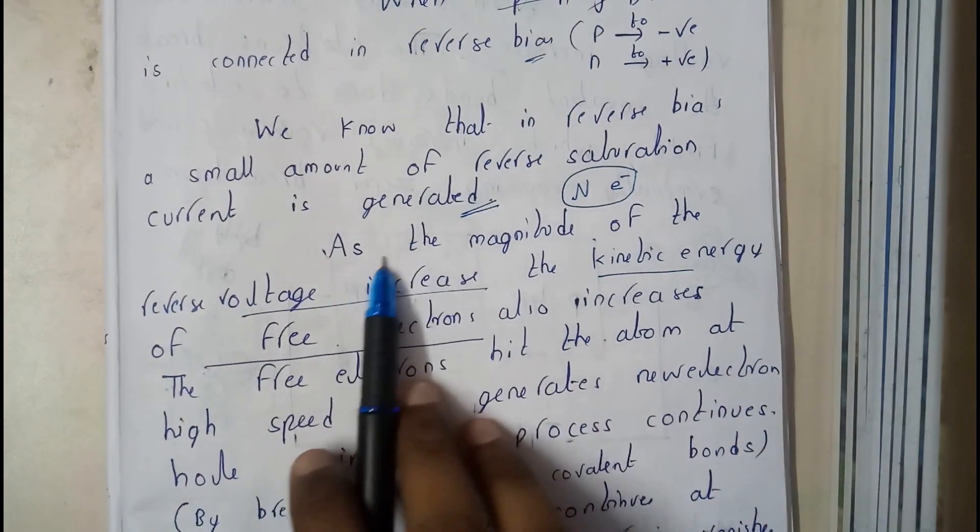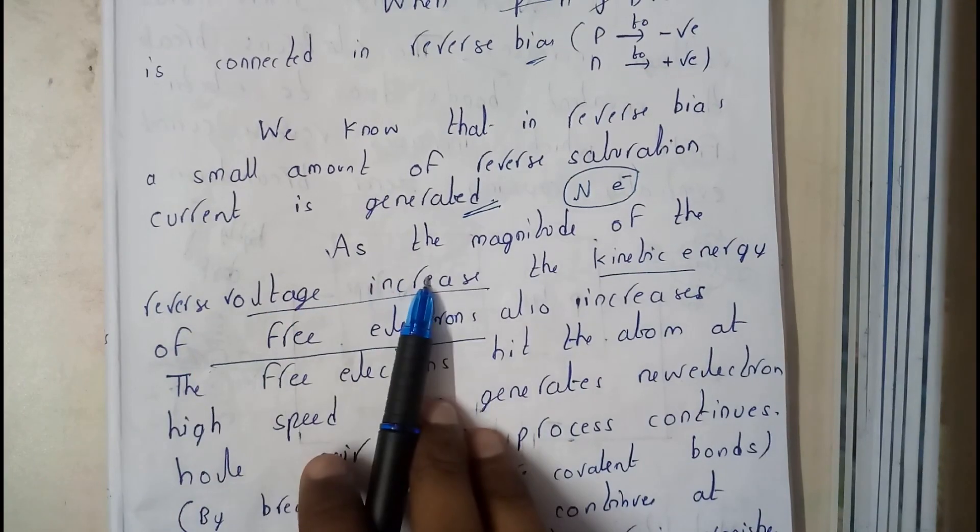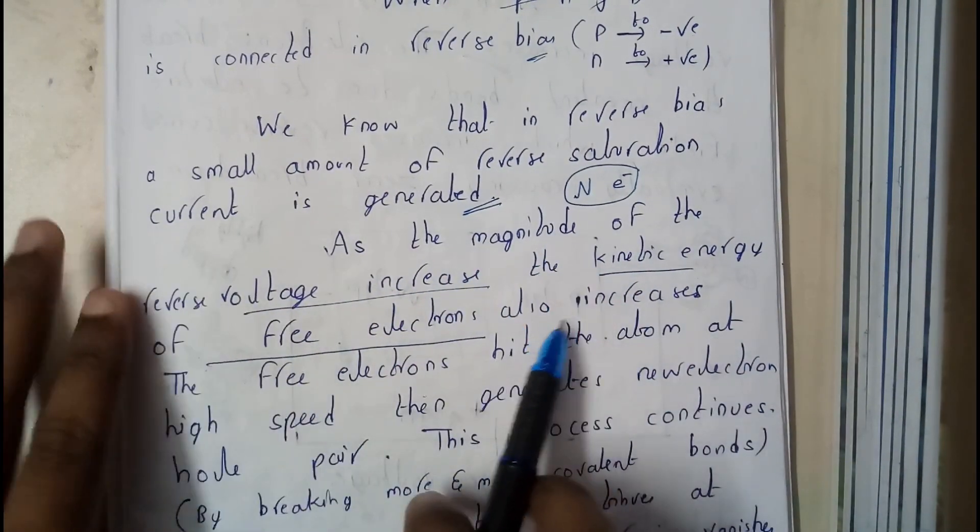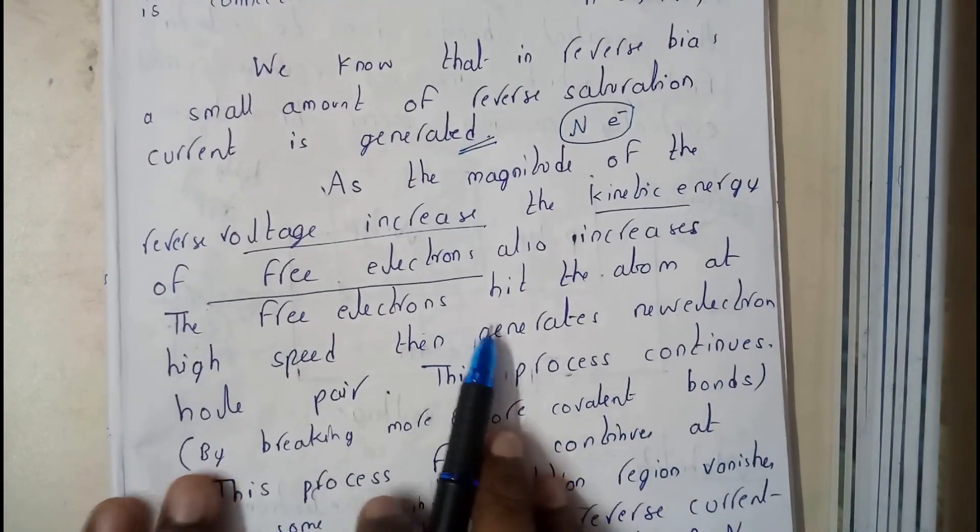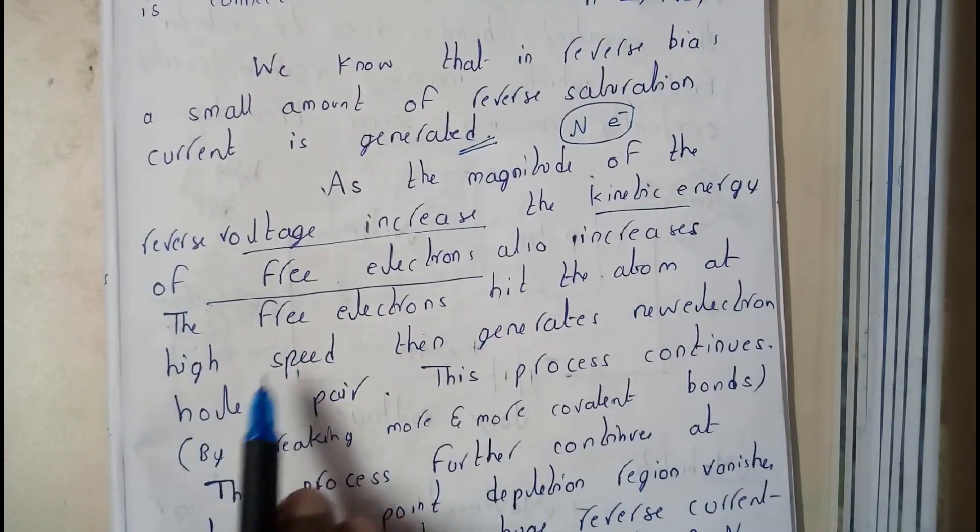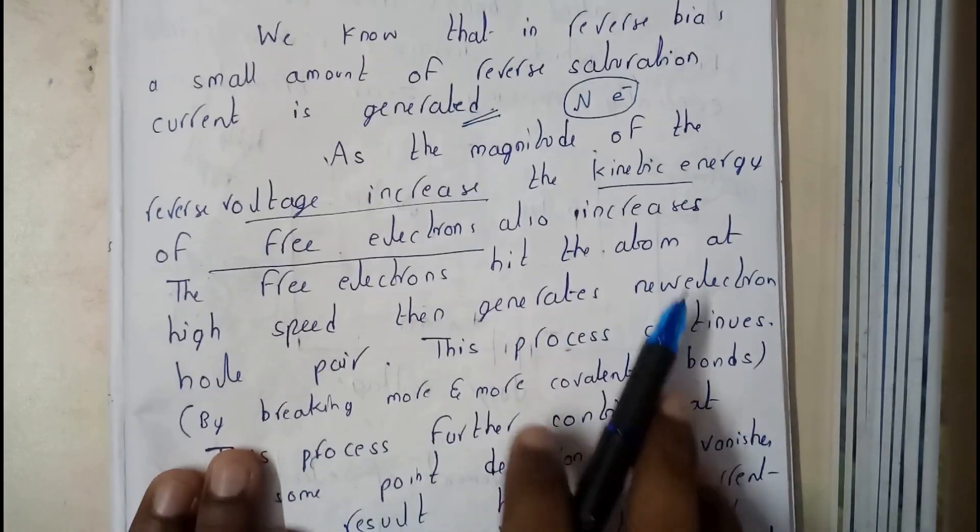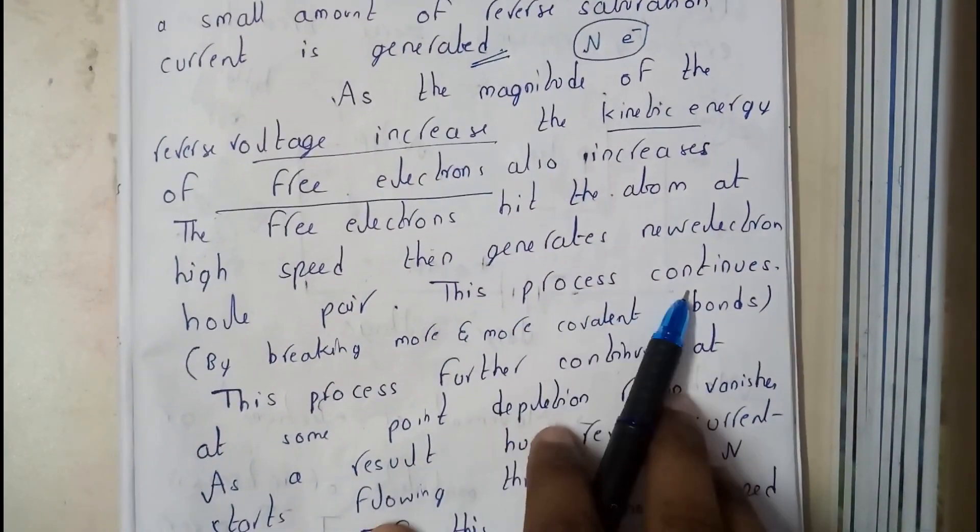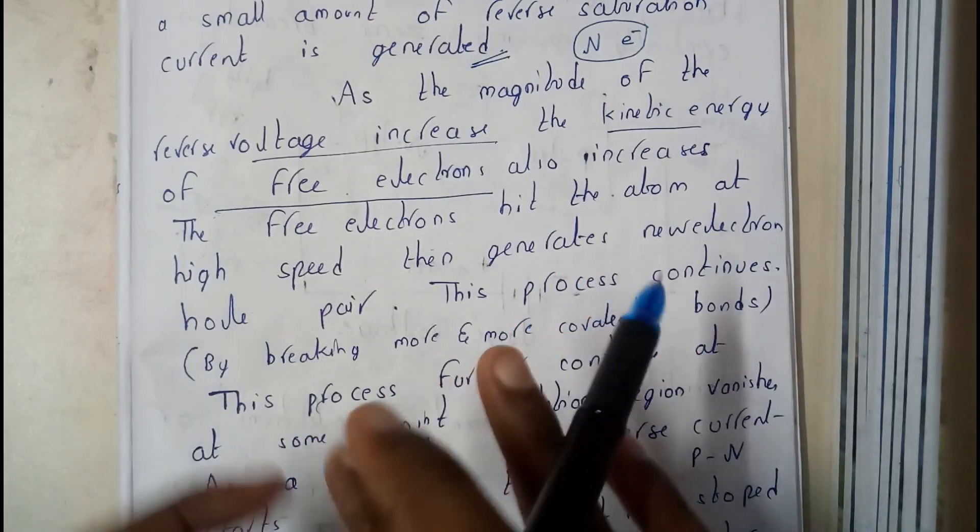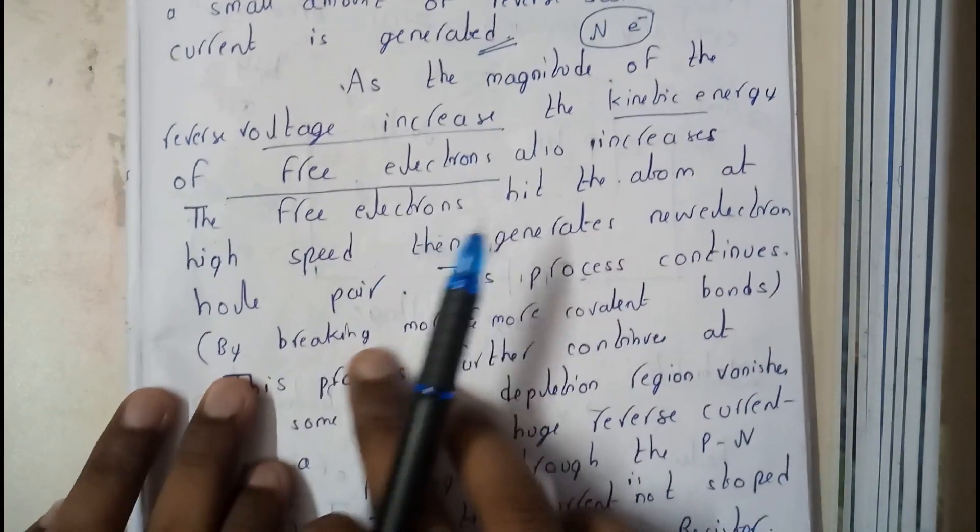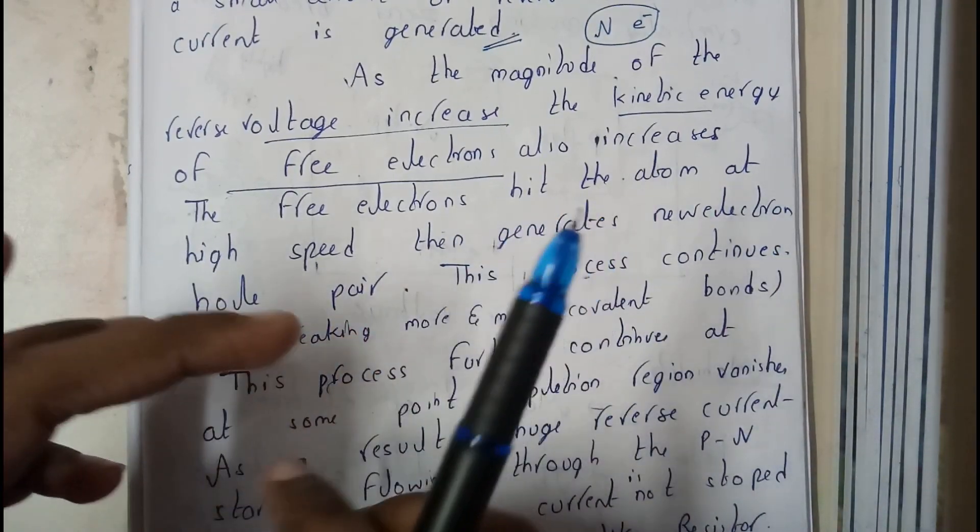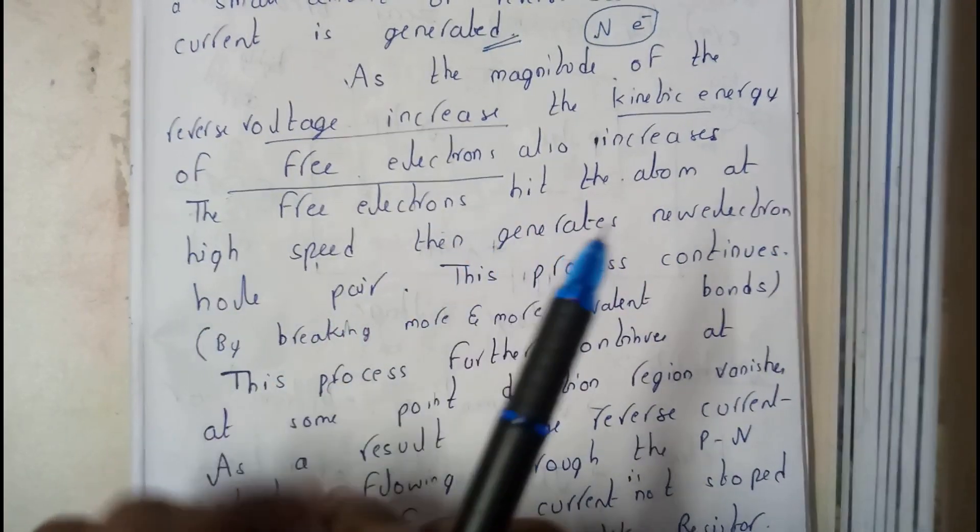Basically, as the magnitude of the reverse voltage increases, the kinetic energy of free electrons also increases. The free electrons hit the atoms at high speed and then generate new electron-hole pairs. This process continues and continues, they break more and more covalent bonds.